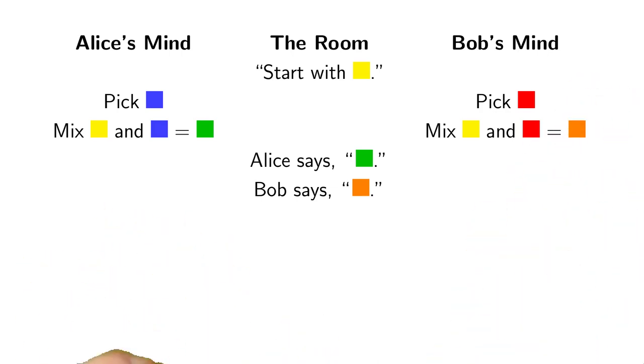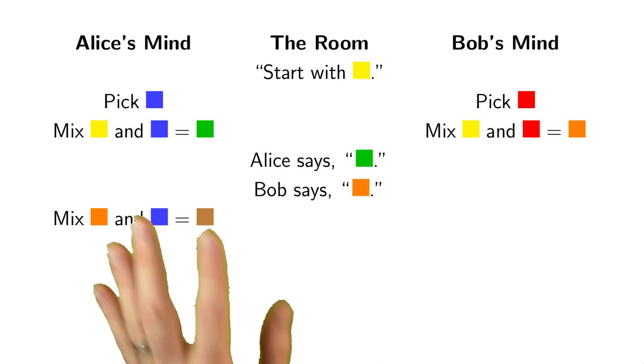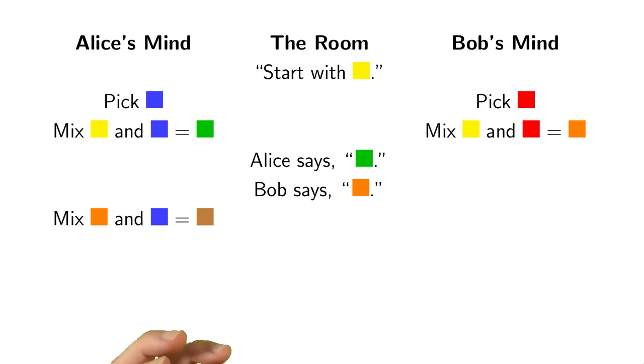Now at this point, Alice heard Bob say orange. So Alice is going to take what Bob said, orange, and mix it in with her secret color, blue, in order to get a new secret color, brown, that only Alice knows.